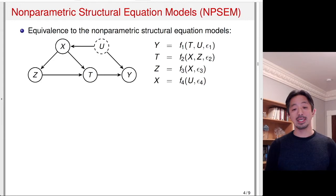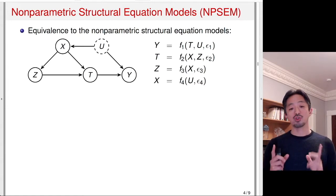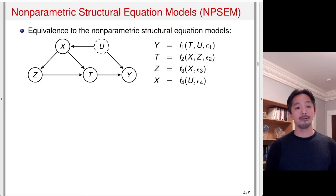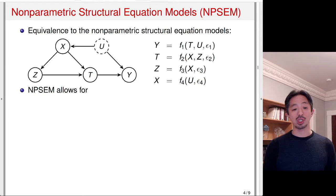Similarly, T is a function of X and Z and an error term, because if you look at the graph on the left, you see that there's two incoming arrows into T. One is coming from X, the other coming from Z. And similarly, Z is a function of X, because there's only one incoming arrow into Z that's coming from X, and an error term epsilon 3. Finally, X has only one incoming arrow coming from U, so X is a function of U and an error term. The structural equation models on the right is represented graphically on the left in a very intuitive manner.